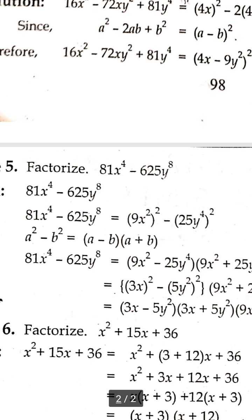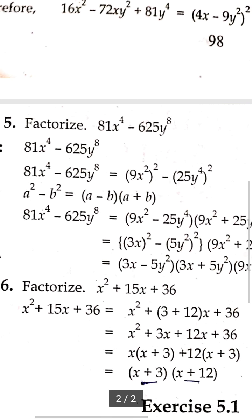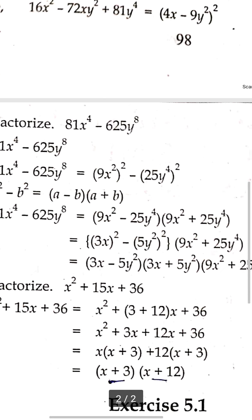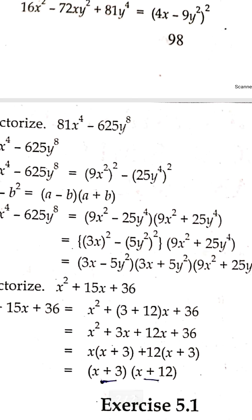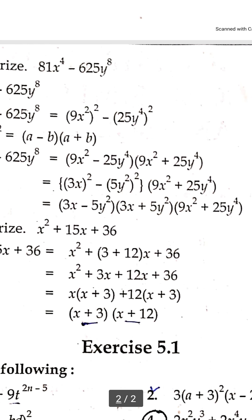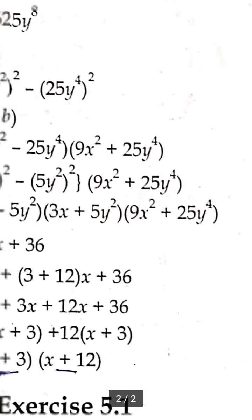Example 5: Factorize 81X⁴ - 625Y⁸. Using A² - B² = (A - B)(A + B), we have (9X²)² - (25Y⁴)² which equals (9X² - 25Y⁴)(9X² + 25Y⁴). This further breaks down to (3X - 5Y²)(3X + 5Y²)(9X² + 25Y⁴).